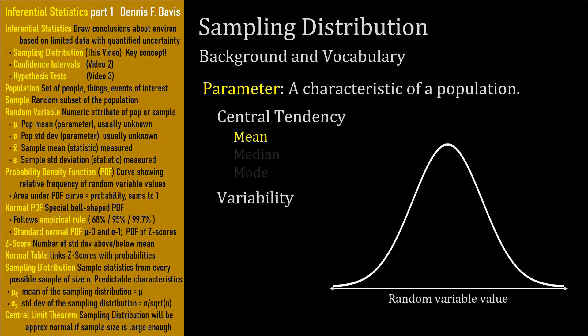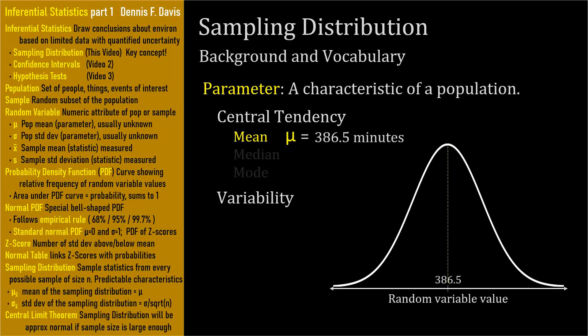The mean is the average. The population mean has a special symbol — the lowercase Greek letter mu. Here's the formula for the mean: x sub i represents the random variable value of each member of the population, and capital N represents the number of population members. So add them up and divide by N. For our example, the mean is 386.5 minutes.